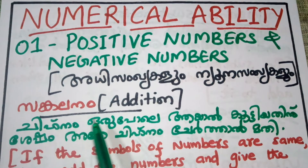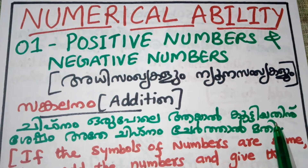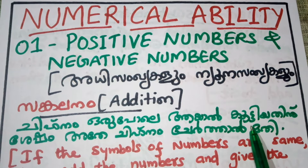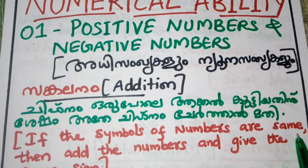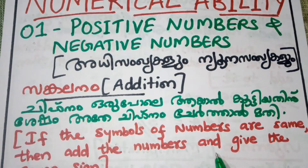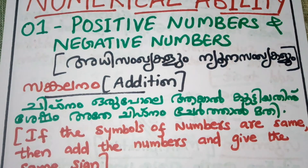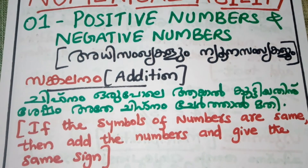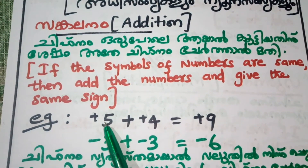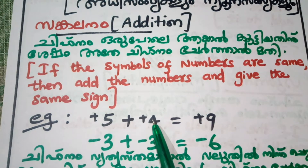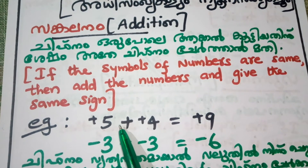If we are going to write a smaller element, one more to the left. If the symbols of the numbers are the same, then add the numbers and give the same sign. For example, positive 5 and positive 4 — both are positive numbers.